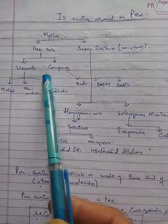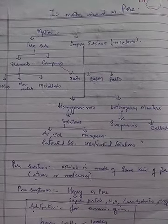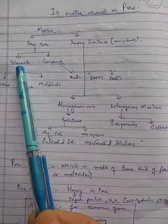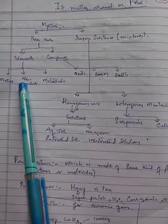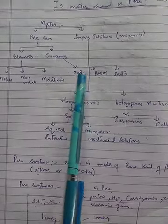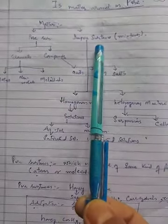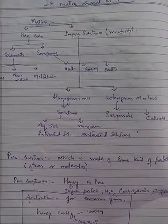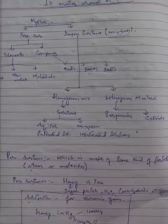These pure substances are defined as those substances which are made up of the same kind of particles or the same kind of atoms. In chemistry, pure substances may be elements or compounds. Elements are subdivided into metals, non-metals, and metalloids. And compounds are categorized into acids, bases, and salts. Impure substances, or mixtures, are those substances which are made up of different kinds of particles and different kinds of atoms.